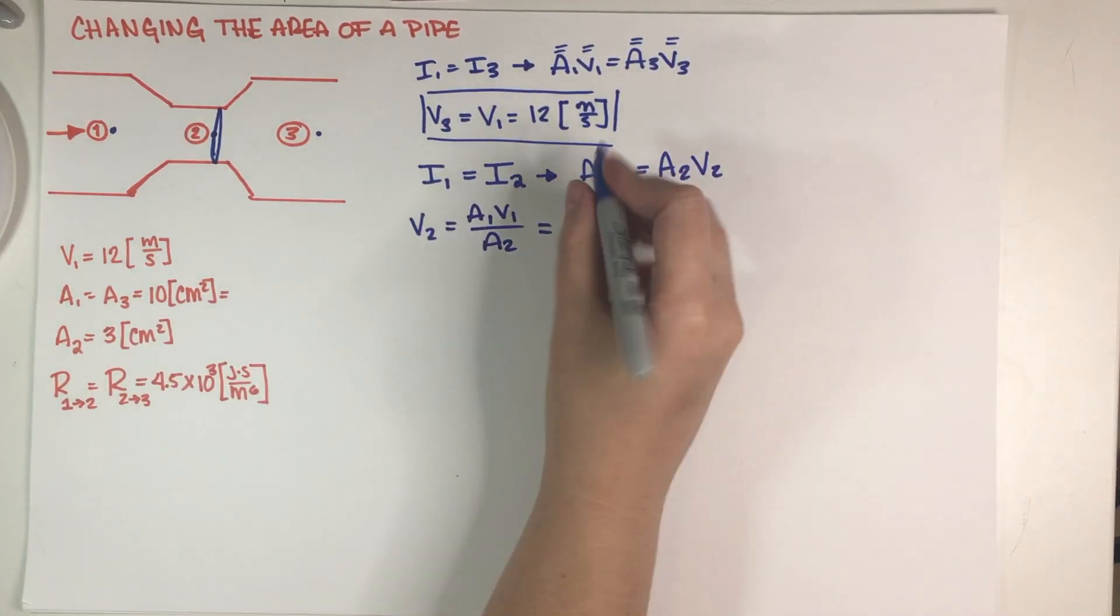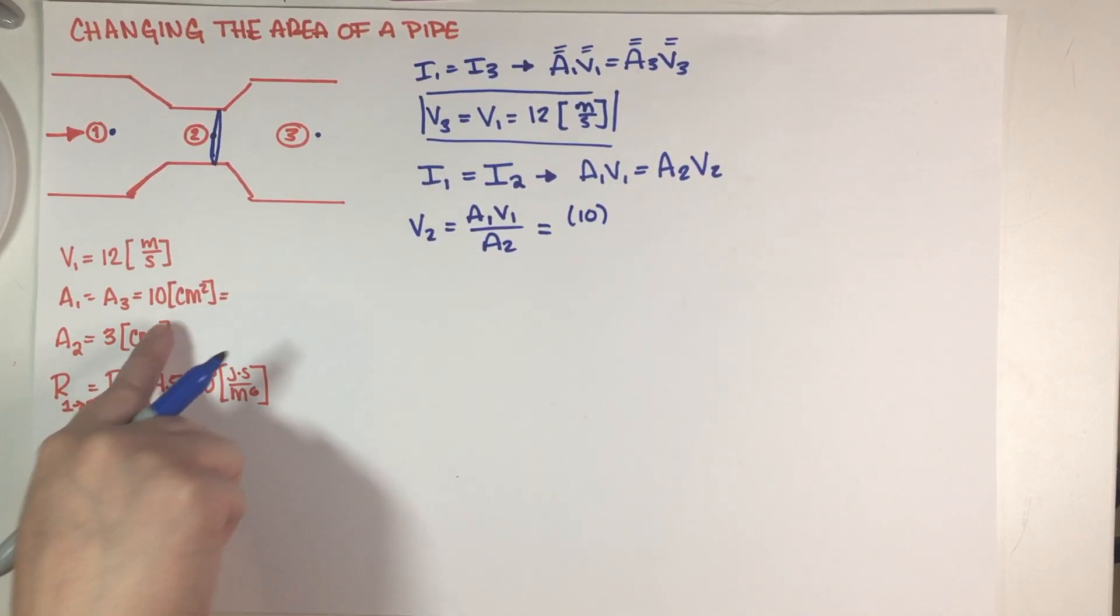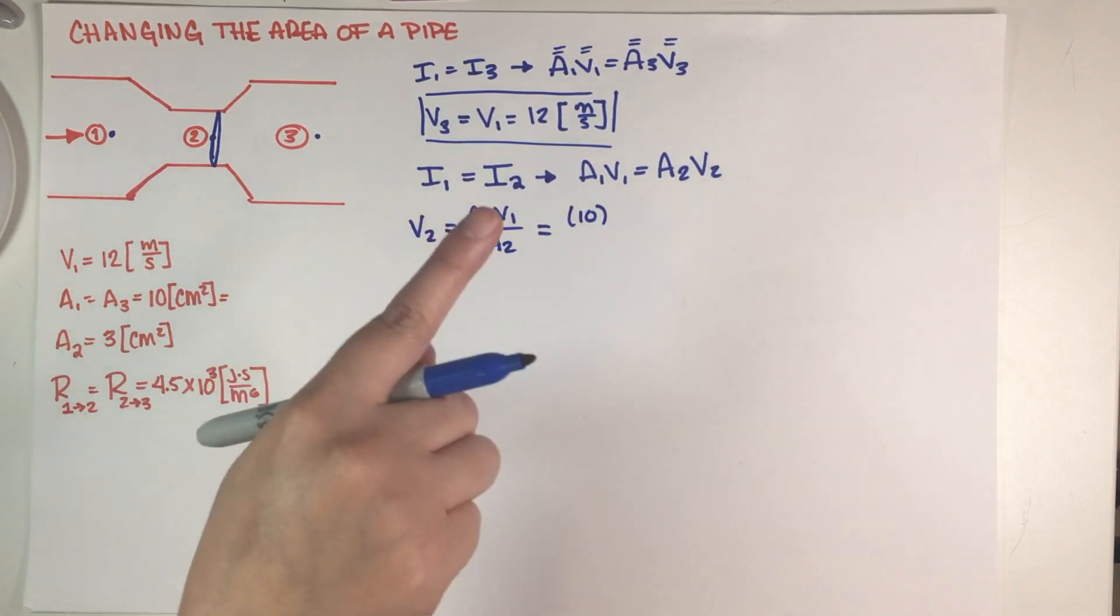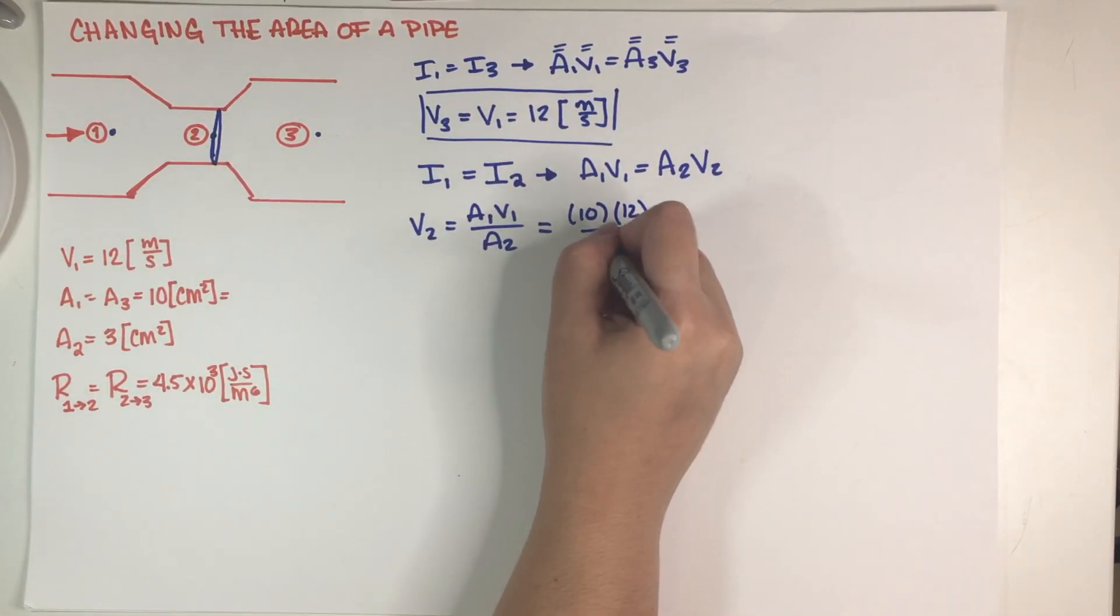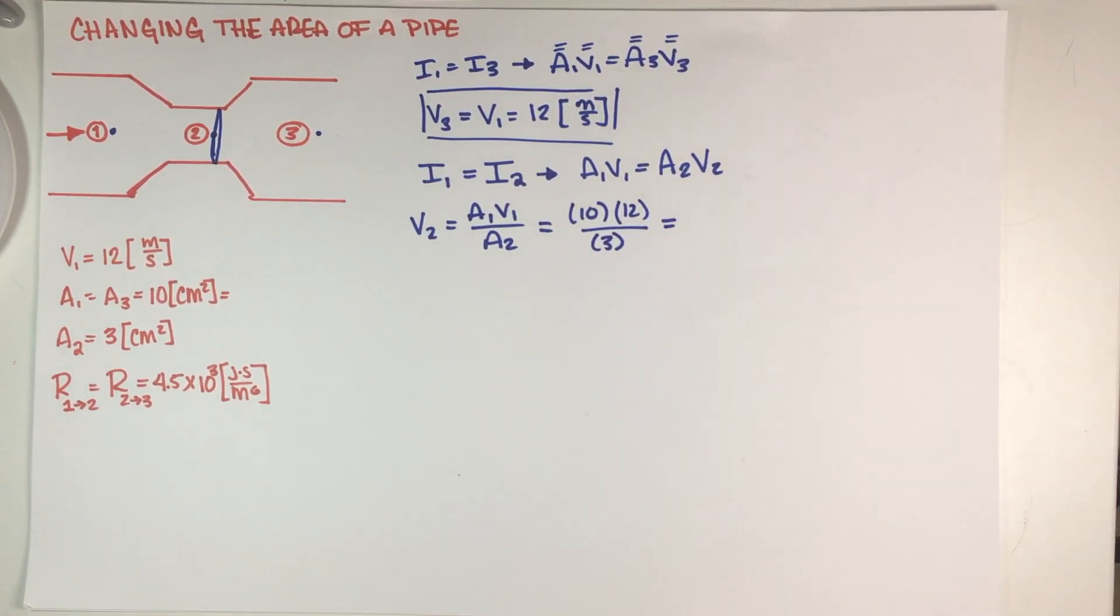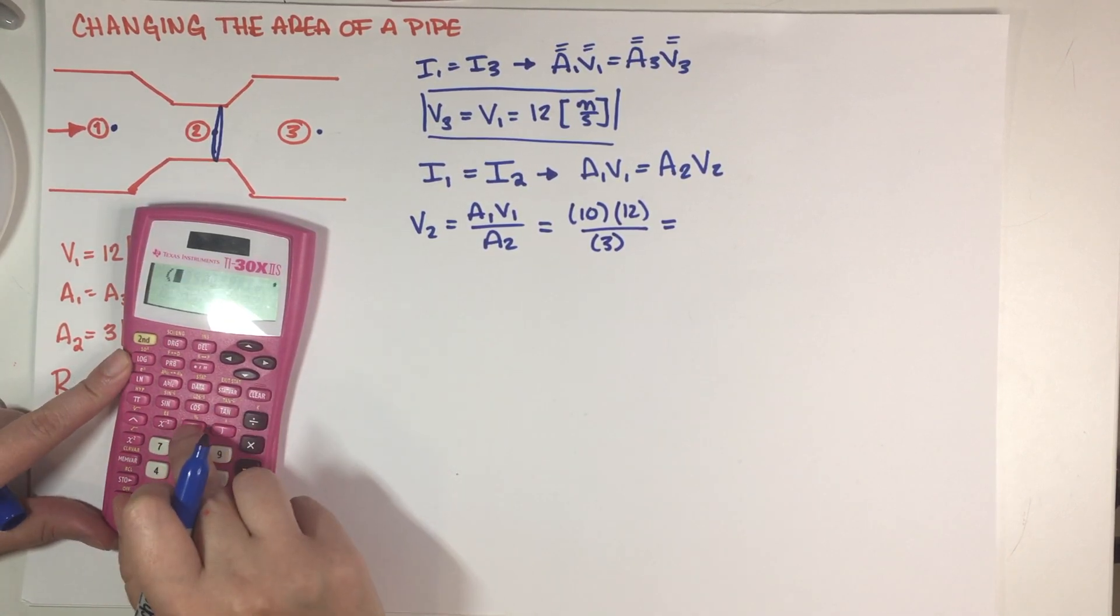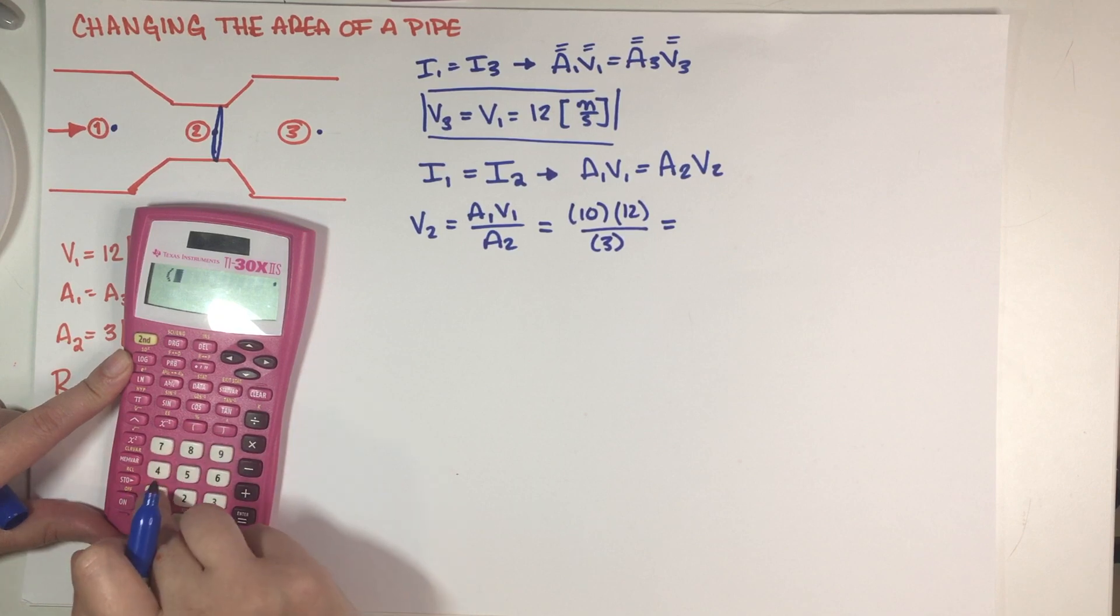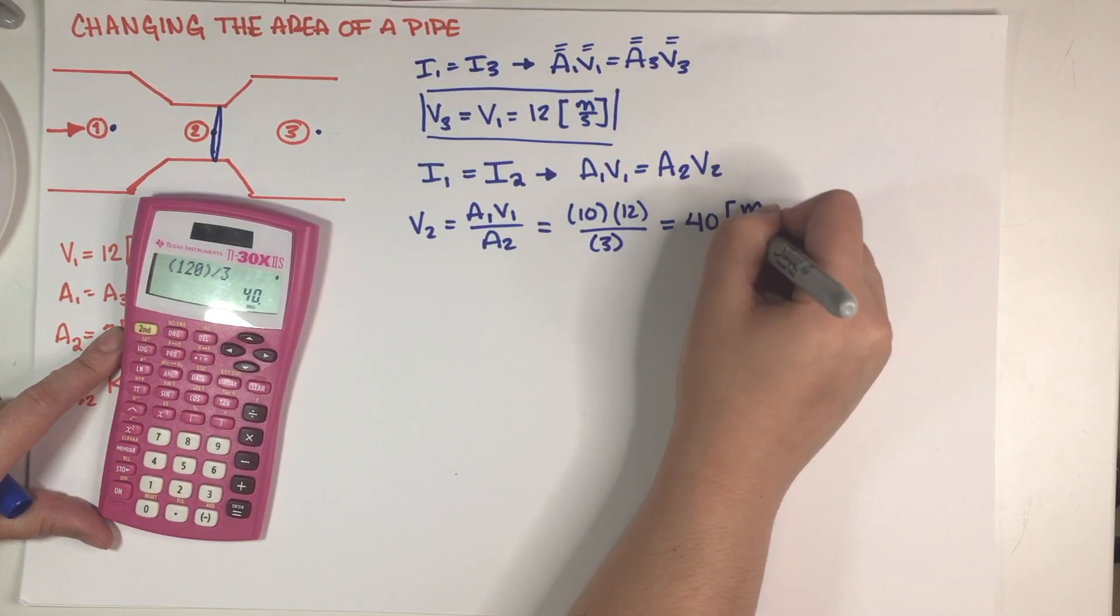Area 1 is 10 centimeters squared. I'm not going to change that to SI units because I'm going to divide these two so the units are going to get cancelled anyways. V1 is equal to 12 and then this smaller area is equal to 3. This cancelled the units so there was no need to change the SI units. So this is going to be equal to just 120 divided by 3, so this is equal to 40 meters per second.